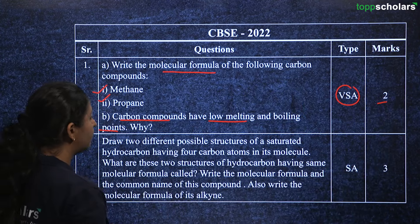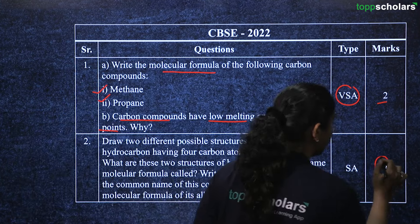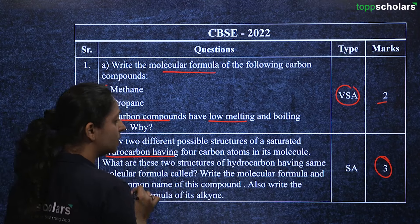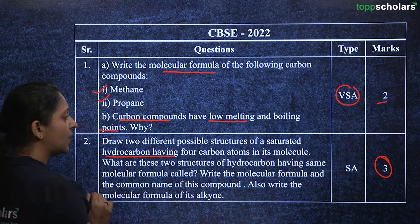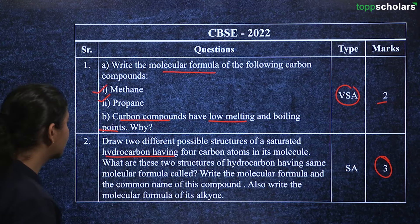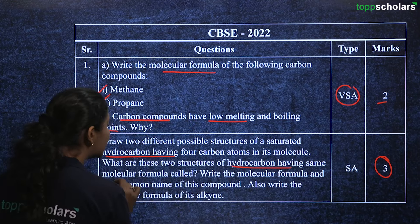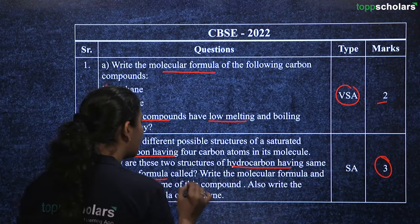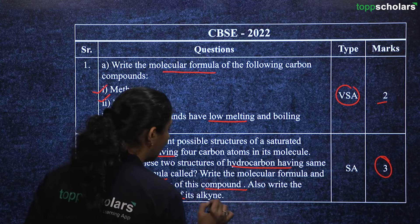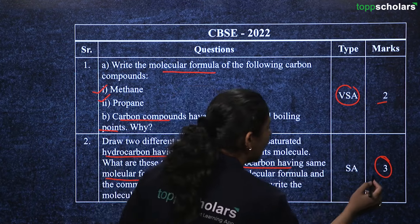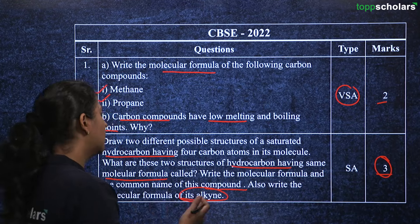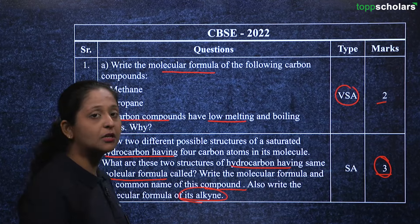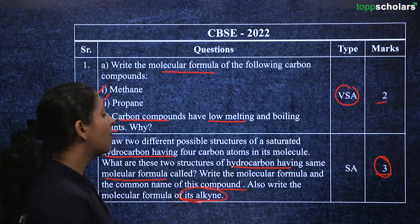From the year 2022, there is a three mark short answer question: draw two different possible structures of saturated hydrocarbons having four carbon atoms in their molecules. What are two structures of hydrocarbons having the same molecular formula called? Also write the molecular formula and common name of the compound, and write the molecular formula of the given alkyne. There are many small sub-questions within this one question.